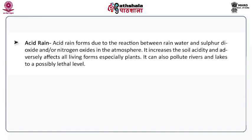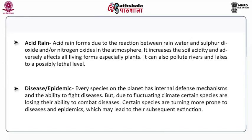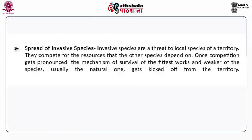Acid rain is formed when rain water reacts with sulfur oxides and nitrogen oxides in the atmosphere. It decreases soil acidity, and the flora, fauna and microorganisms that live in the soil are adversely affected due to the increase in acidity. It can also pollute rivers to a possibly lethal level. Other factors include disease and epidemic. Every species on the planet has a defense mechanism — an immune system that has the ability to fight diseases. But due to fluctuating climate, certain species lose their ability to combat disease. Certain species are turning more prone to diseases and epidemics and consequently becoming extinct.